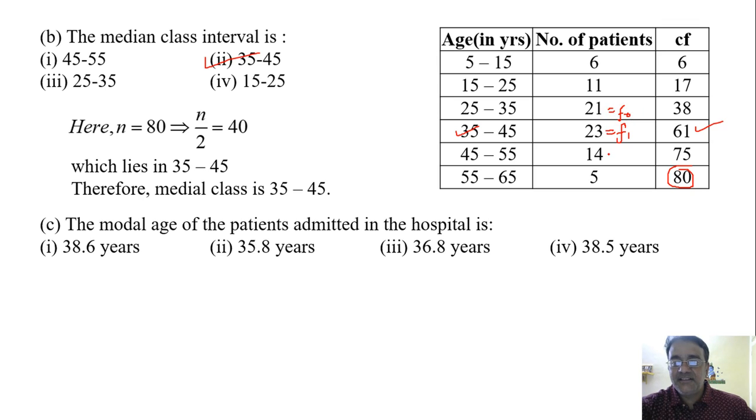And this is F2, and we know the value of H is 10. So we'll write first all these values. What is the formula of mode in terms of F0, F1, F2?